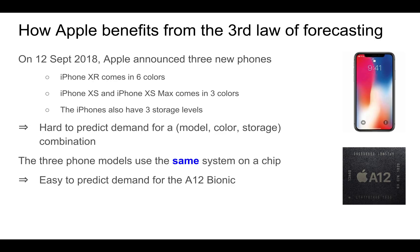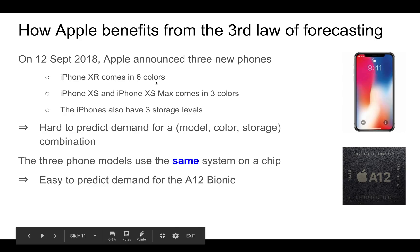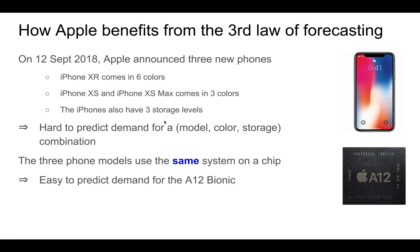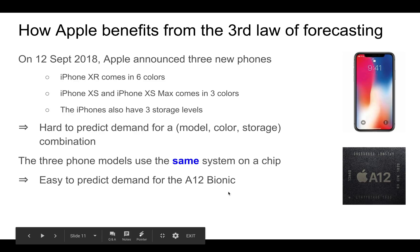Let's look at an example — Apple, which benefits from the third law of forecasting. In 2018, Apple announced three new phones: the iPhone XR and the iPhone XS and XS Max. Because there are different choices in terms of colors, storage levels, and three models, it's quite difficult to predict demand for a particular model, color, and storage combination. However, one interesting thing is that all three phone models use the same system on a chip — the so-called A12 Bionic chip. So even though it's hard to predict demand for individual combinations, it's much easier to predict the demand for the A12 Bionic chip.